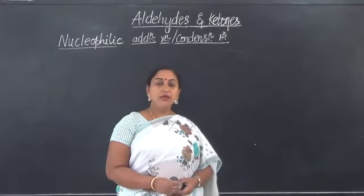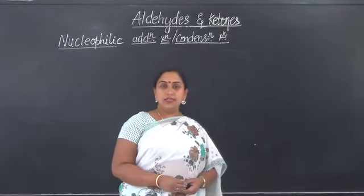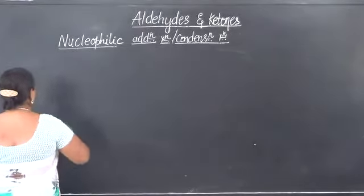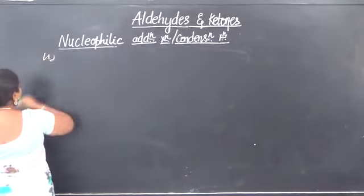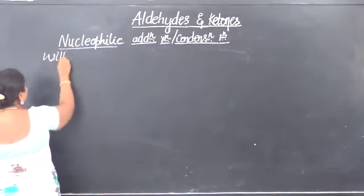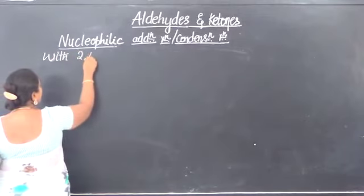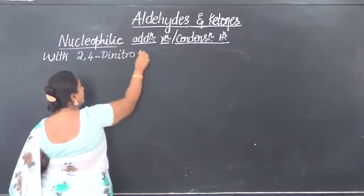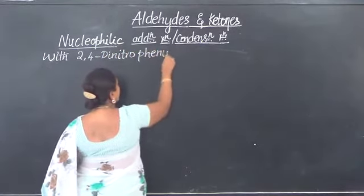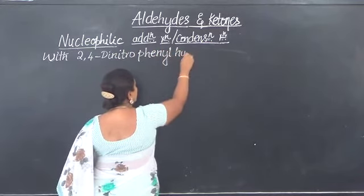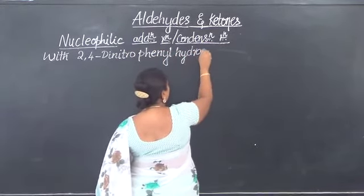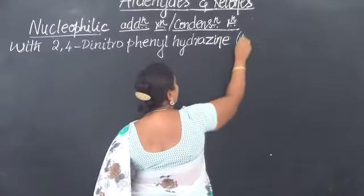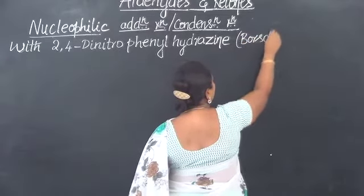Let us learn in this video the action of aldehydes and ketones with Borsch's reagent. The chemical name of Borsch's reagent is 2,4-dinitrophenylhydrazine. This is popularly called Borsch's reagent.